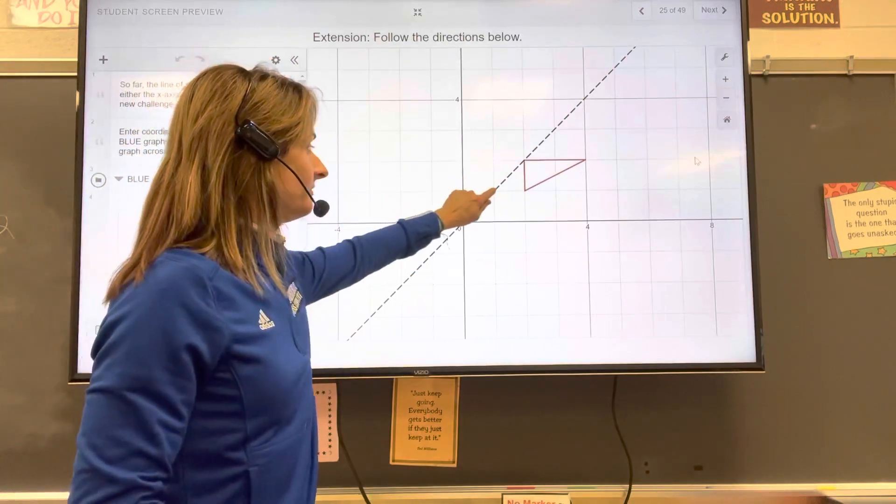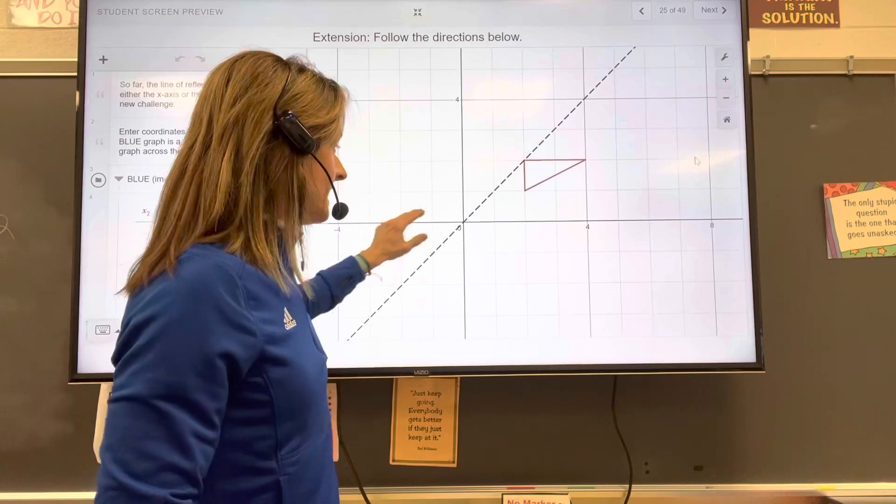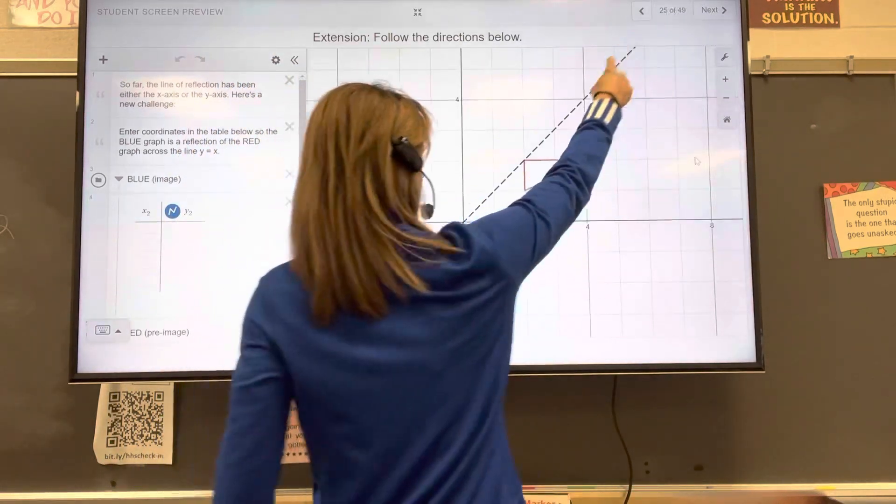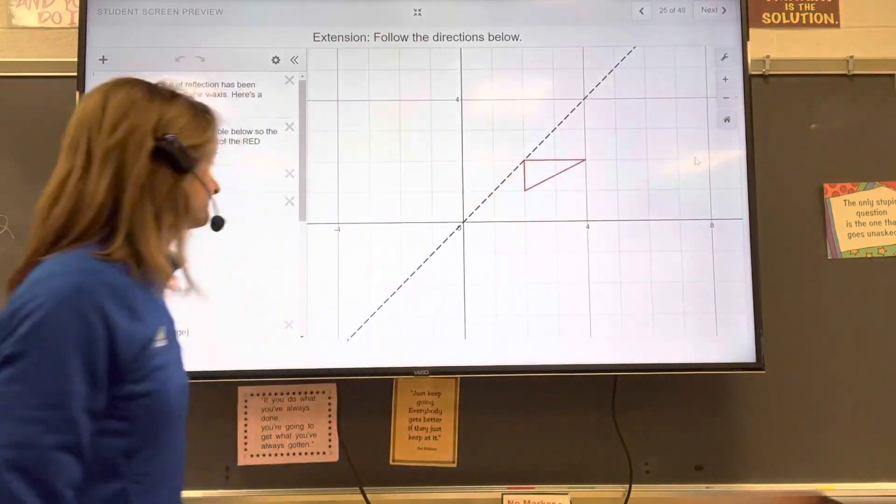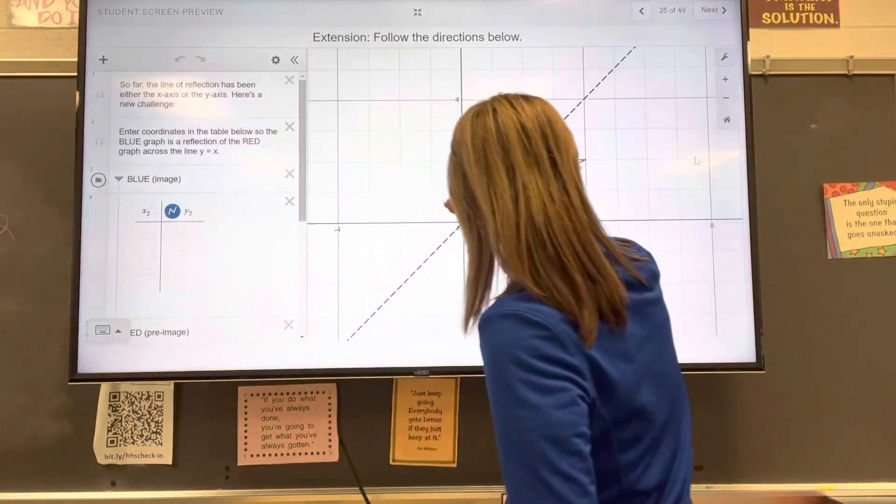It's y equals x because every single point or ordered pair on that line has an x-coordinate and a y-coordinate that's the same. So that point is at 4, 4. That point is at 1, 1. Okay? Y equals negative x would be the next most common this way.